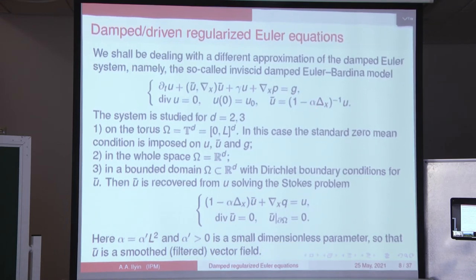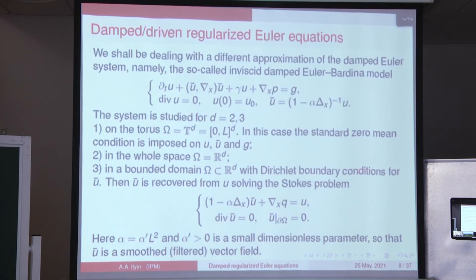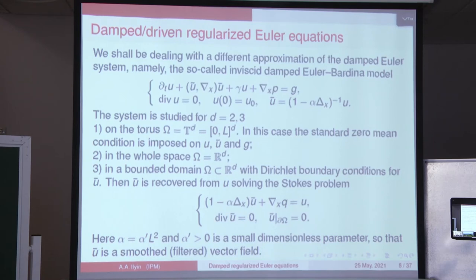One can expect that when alpha is small, then U-bar will be a smoothed vector field such that the higher frequencies with respect to x are filtered out. We study this system in dimension two and dimension three in three settings as far as boundary conditions are concerned: on the torus with zero mean condition for the velocity, in the whole space, and in a bounded domain when U is supplemented with Dirichlet boundary conditions. For now, you can think that we work where the Leray projection commutes with the Laplacian, namely without boundaries — on the torus or in R^d.